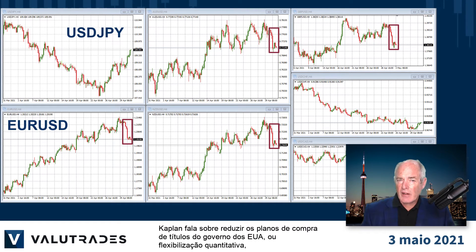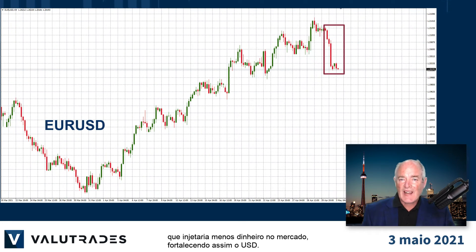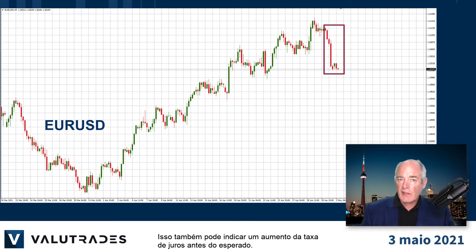Kaplan talks about tapering the US government's bond buying plans, or quantitative easing, which would inject less cash into the markets, thereby strengthening the US dollar. This may also indicate an interest rate rise earlier than expected.